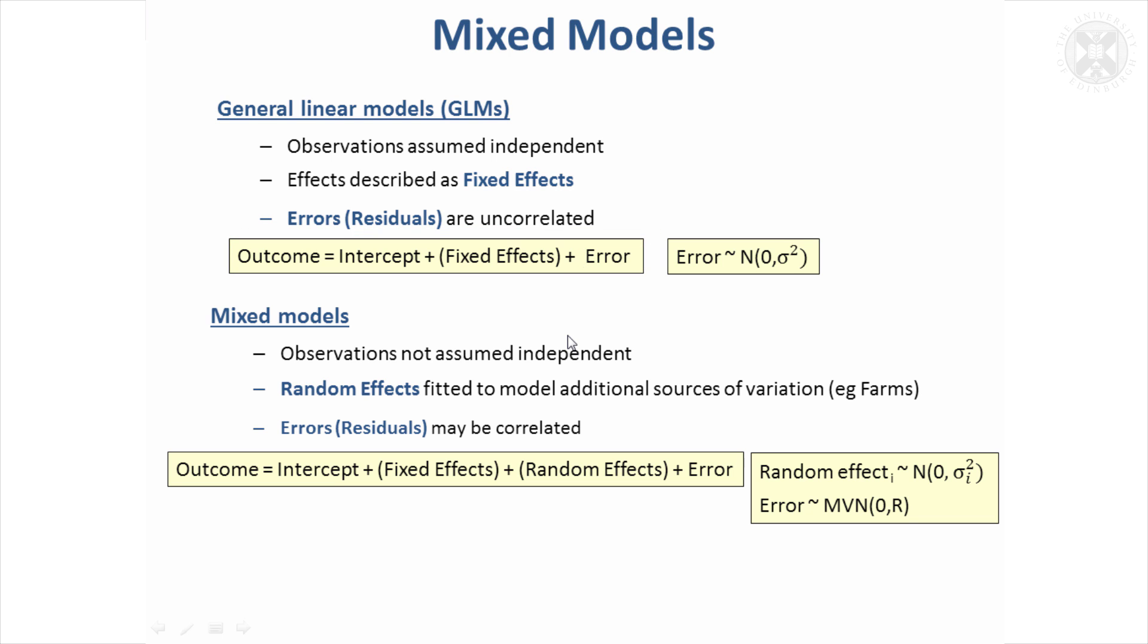So if we extend that to mixed models, the big difference is we can also include effects as random, so they're assumed to have random variation. So not only the error term has random variation, but each of the random effects fitted has got random variation. So that's quite a different assumption, and it does make a difference to the sort of results and the modeling process.